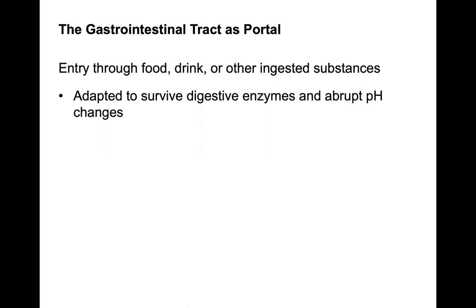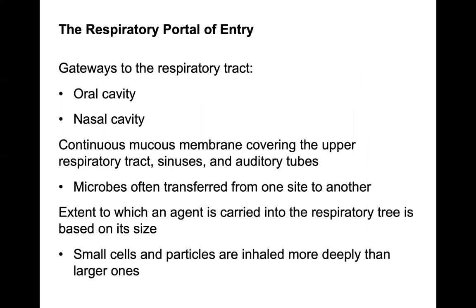Entry through the GI tract would be via food, drink, or other ingested substances. The organism must be adapted to survive the digestive enzymes and abrupt pH changes of the digestive system.